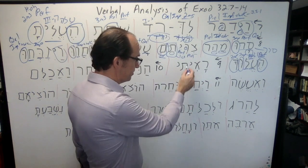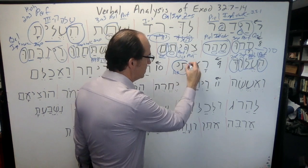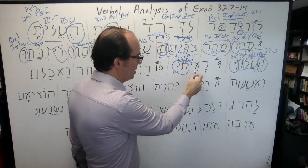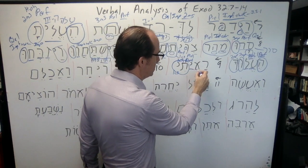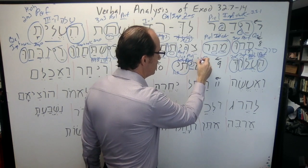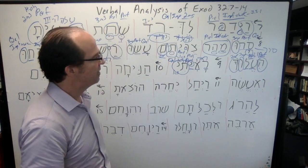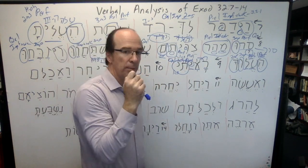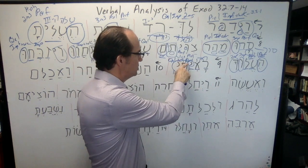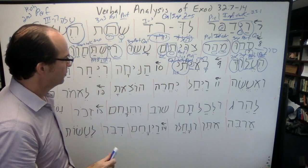Ra'iti. There's our first common singular, so we know we have a perfect. What's the root? Notice the third-hey — this is from ra'ah. This is just a Qal from ra'ah, 'I have seen.' So what kind of perfect is this? It's another fientive: I have seen. The force of the perfect is completed action. That moves us to verse 10.